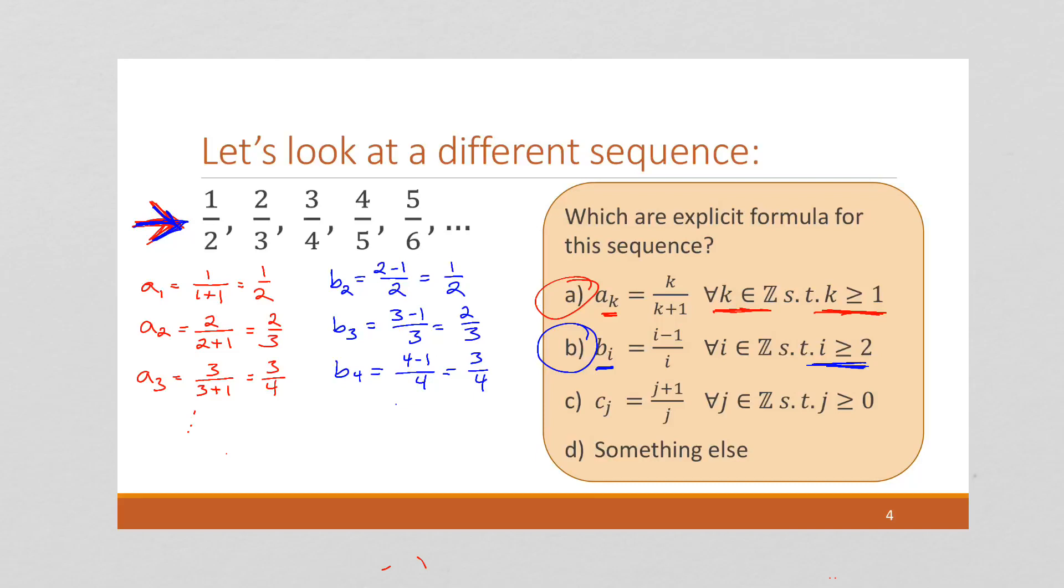There are, in fact, infinitely many explicit formulas that represent this sequence. Let's check, let's check, um, C. Look at C. So we're going to have C starts at 0. So we're going to have C of 0 is equal to 0 plus 1 over 0. Uh-oh. That is undefined. So C is not going to work, but A and B will work. And in fact, there's, since there's going to be an infinite number of elements that work, in a sense, this something else works as well.